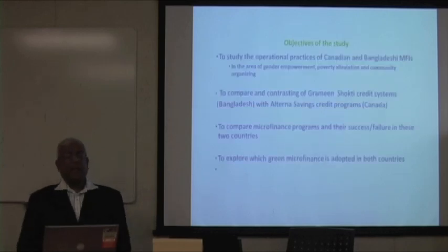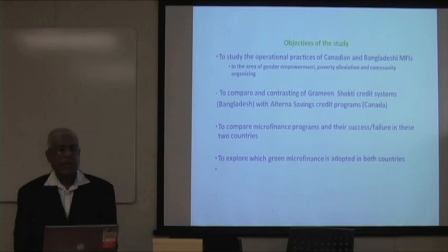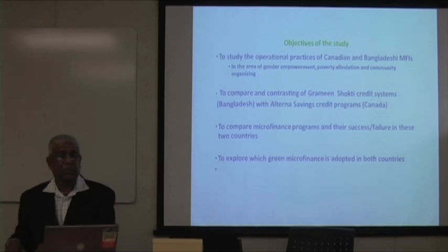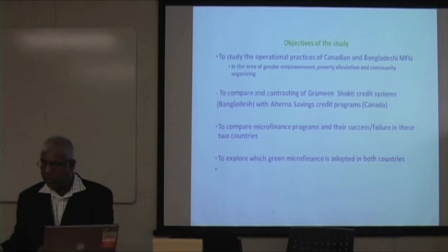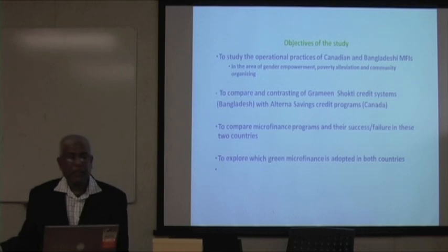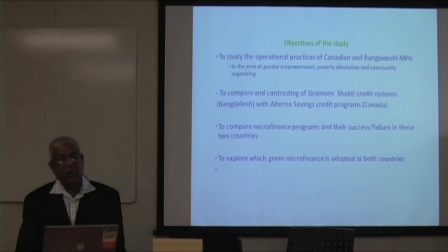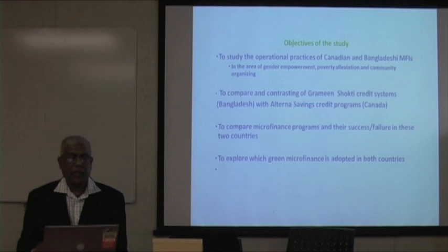The objective of the study was to examine operational practices of Canadian and Bangladeshi microfinance institutions in the areas of general empowerment, poverty reduction, and poverty organizing. To compare and contrast Grameen Shakti systems in Bangladesh with alternate civil security programs in Canada, and to compare microfinance programs and their successes and failures in these two countries, and to explore how green microfinance is adapted in both countries.